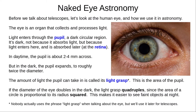First let's look at the human eye in astronomy. The eye is an organ that collects and processes light, although most of the processing is done in the brain. To be effective it needs to collect an appropriate amount of light, and it does this through the pupil, a dark circular region. The pupil is actually transparent — it appears black because light enters the eye through it and is absorbed by the retina at the back of the eye.